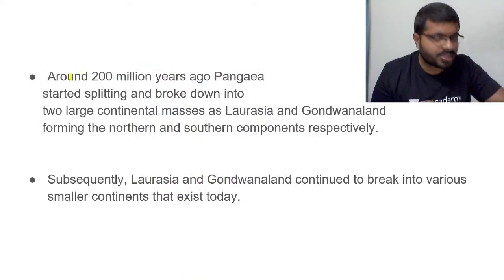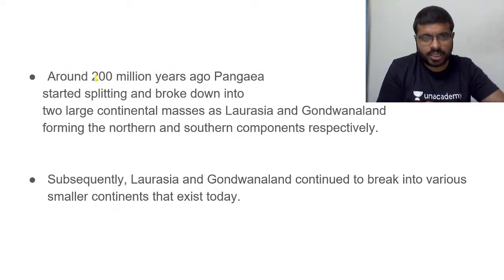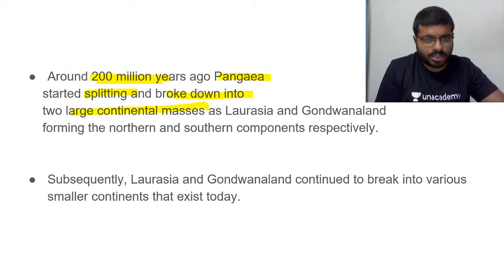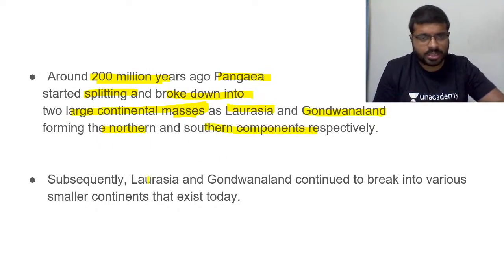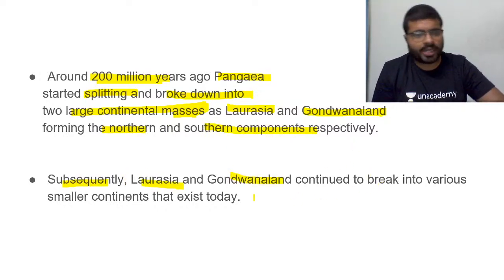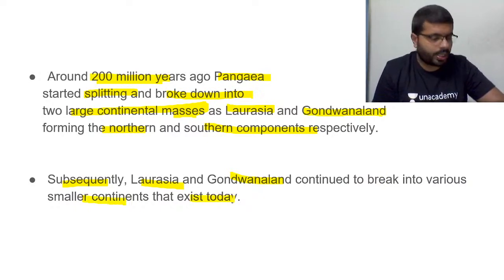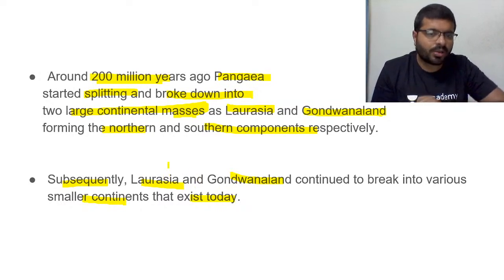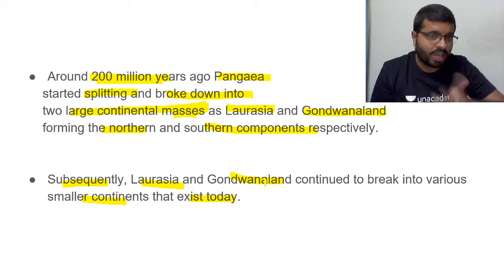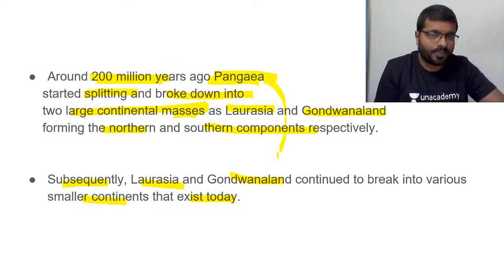According to the hypothesis, around 200 million years ago, Pangea started splitting and broke into two large continental masses: Laurasia and Gondwana Land, forming the northern and southern components respectively. Subsequently, Laurasia and Gondwana Land continued to break apart to form the smaller continents that exist today.